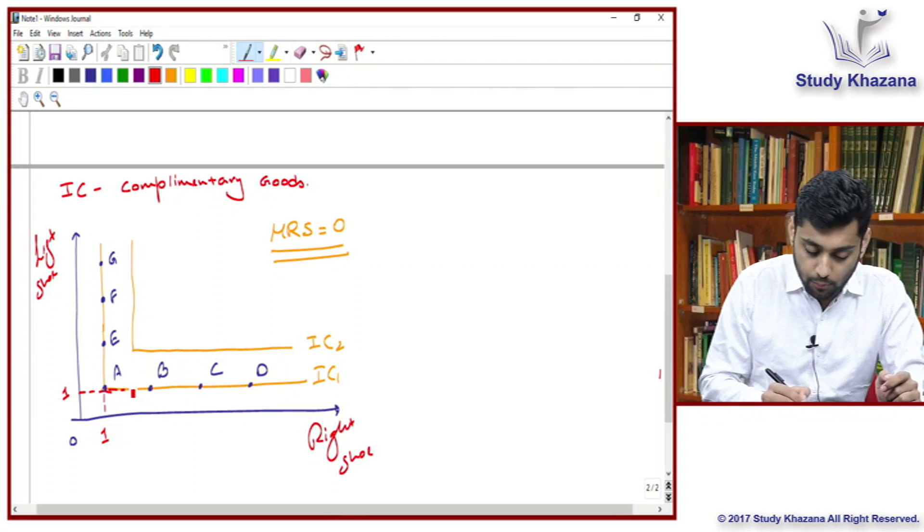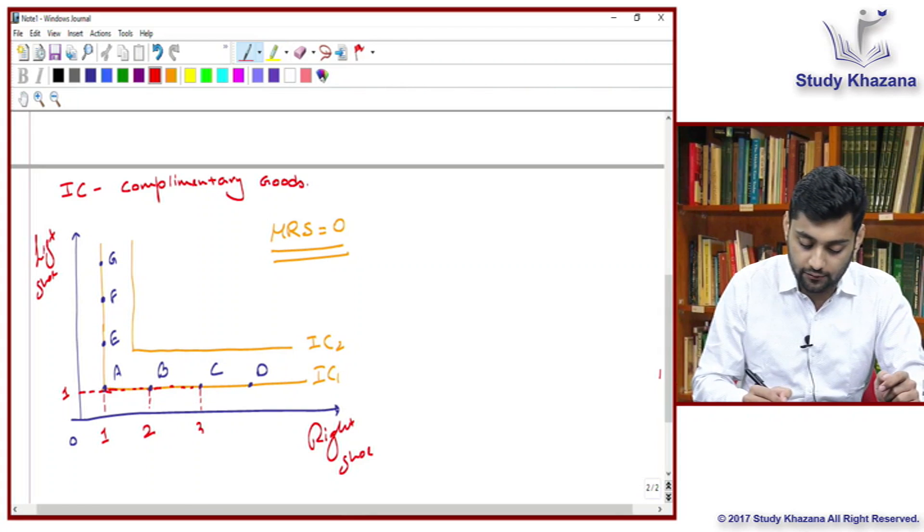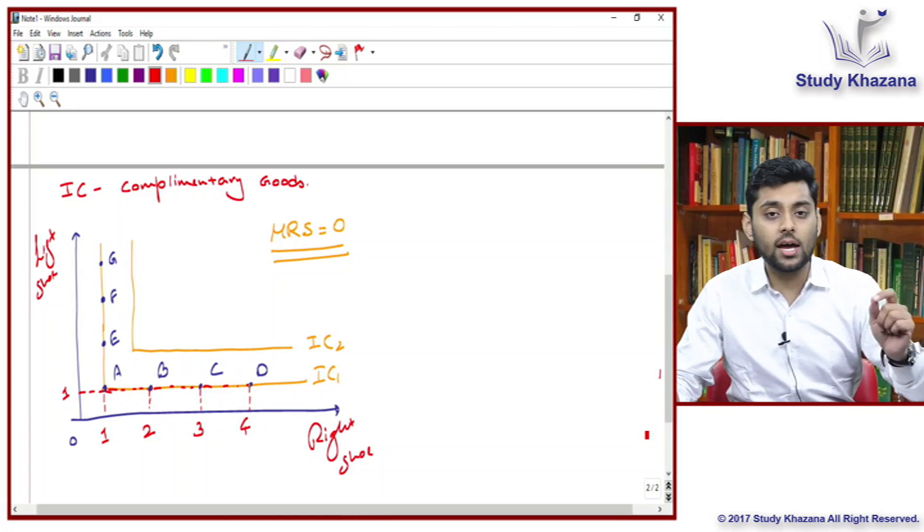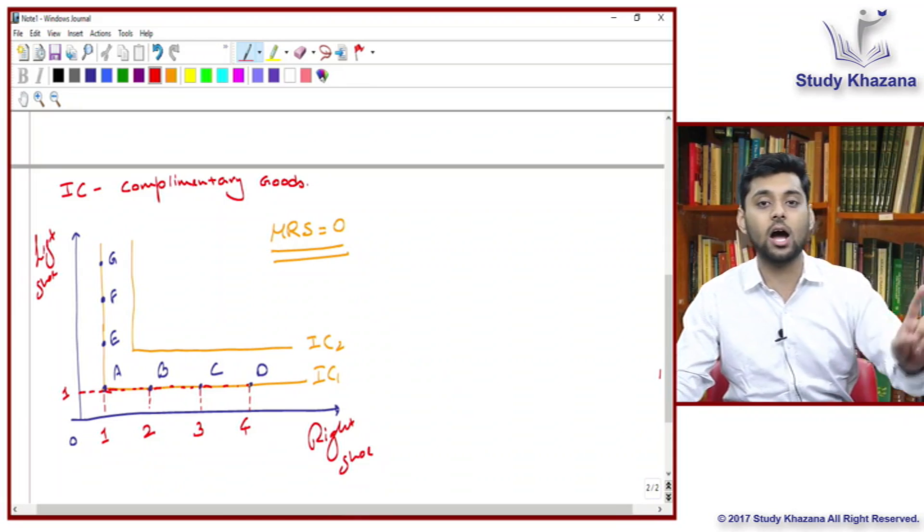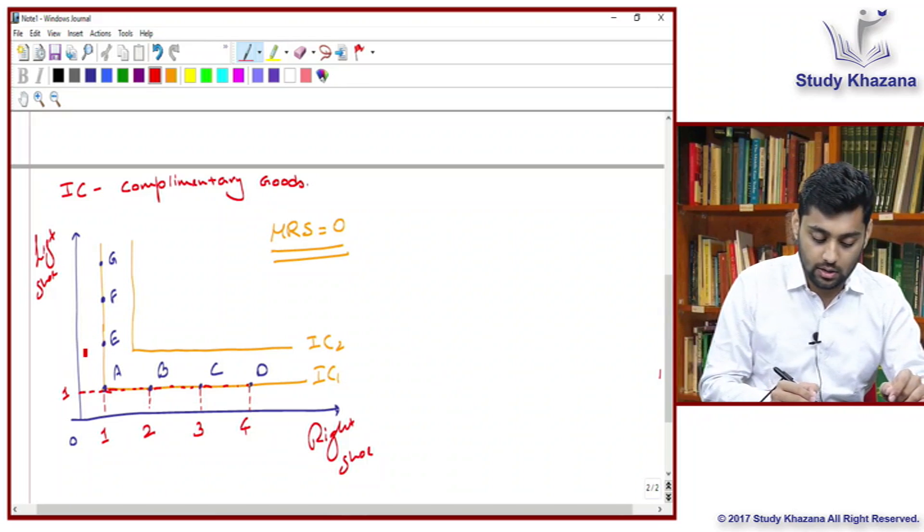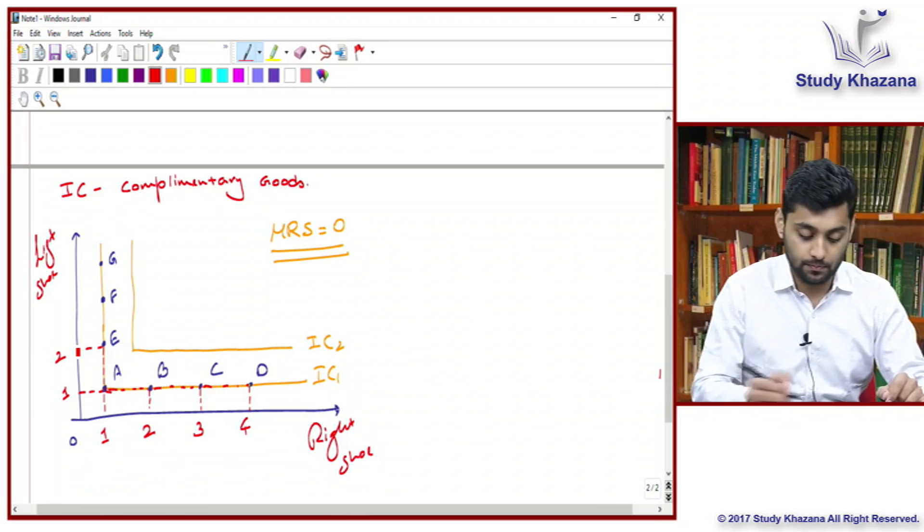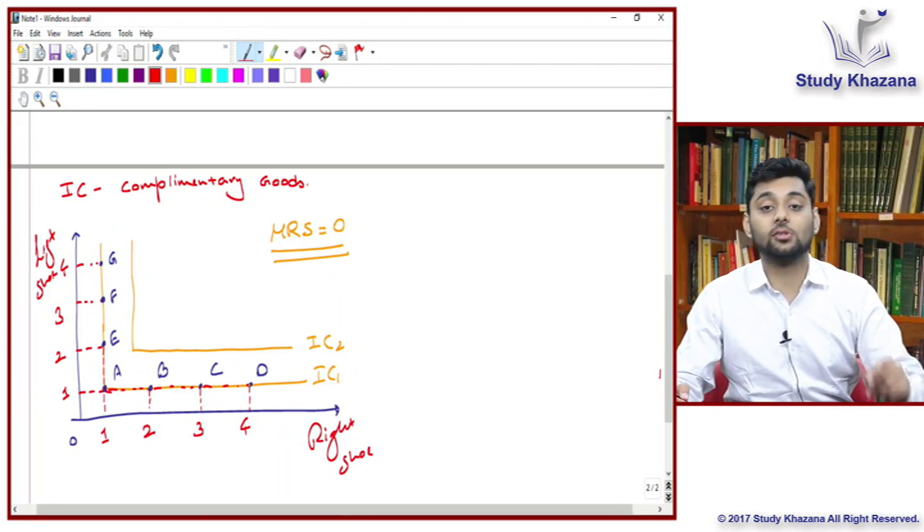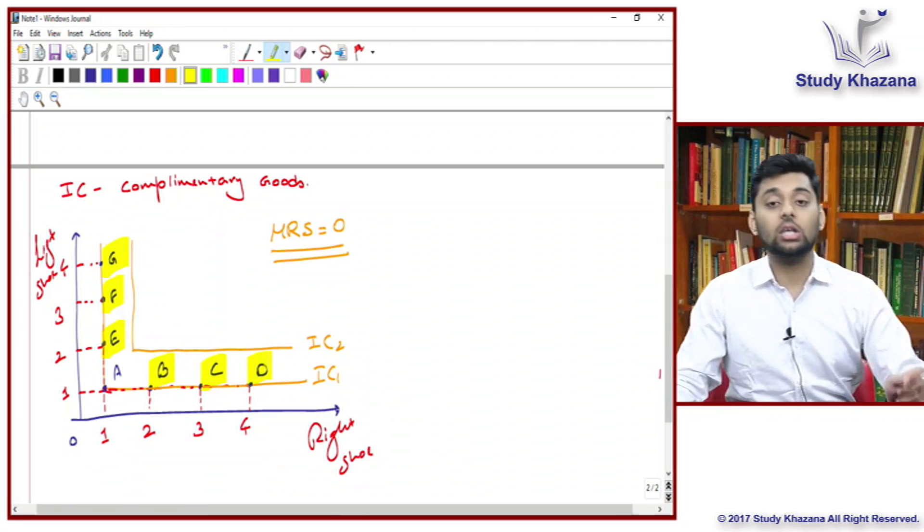Let's say that's point A. We marked three points horizontally and vertically, E, F, and G. Let's take a look at point A. Point A is reflecting one unit of right shoe and one unit of left shoe. Point B is one unit of left and two units of right shoe. Point C is one unit of left and three units of right shoe. And D, one of left and four of right shoe. Will any consumer trade bundles B, C, or D?